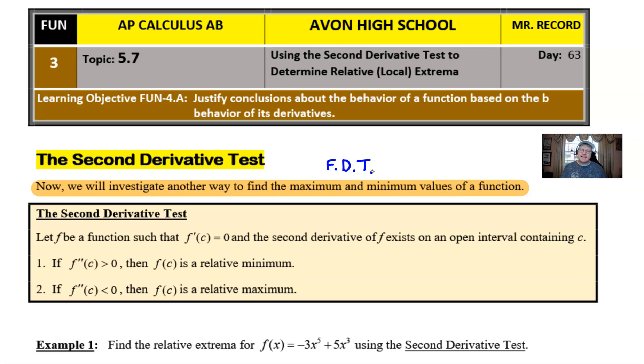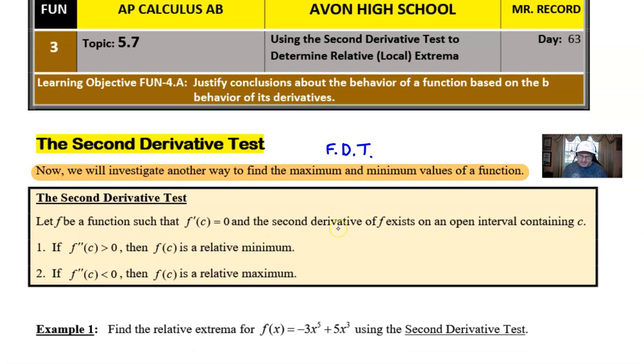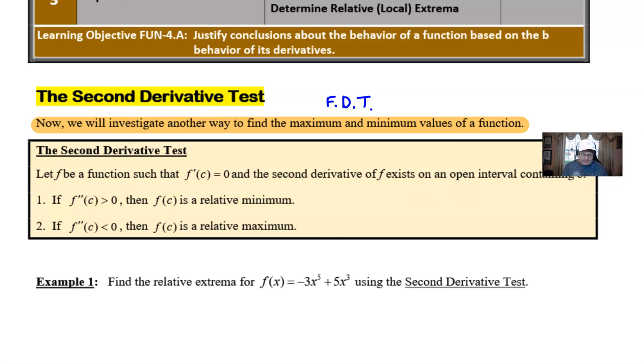So let's take a look in the box and see what the Second Derivative Test is saying to us. It says that you've got a function f and we know that the derivative of f at some value of c is equal to zero. And then we also know that the second derivative of that function will exist on some open interval that does contain that c. So you've got a couple of criteria there that have to be met.